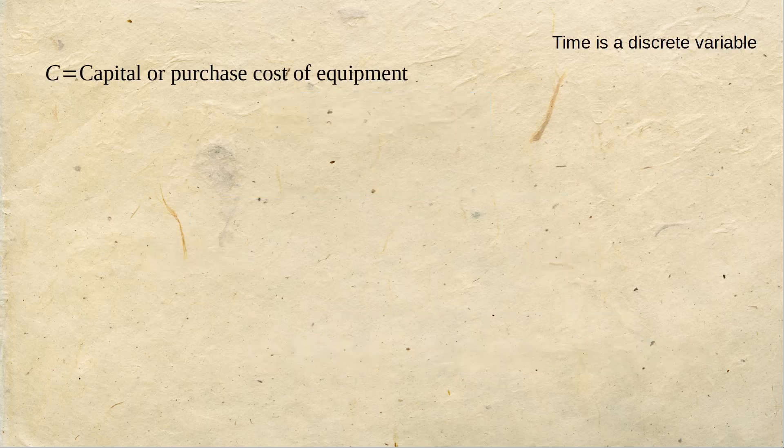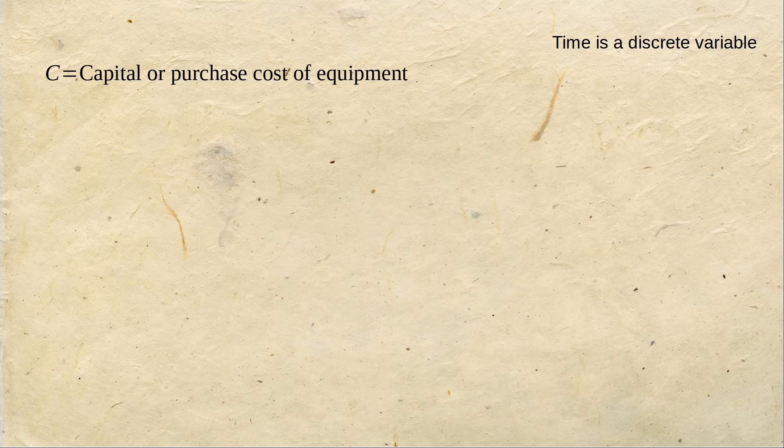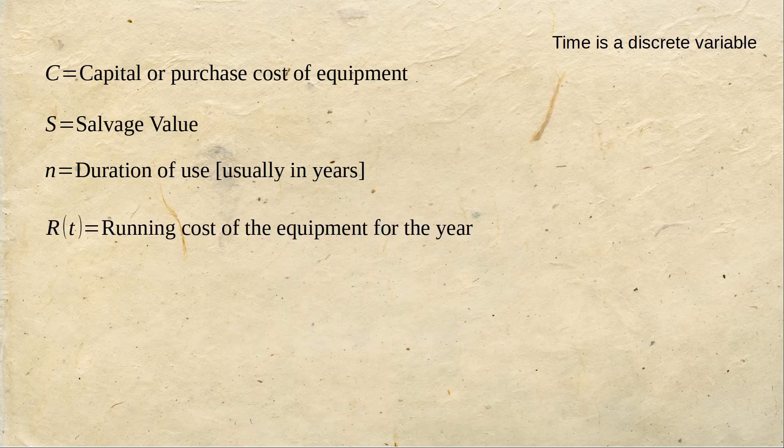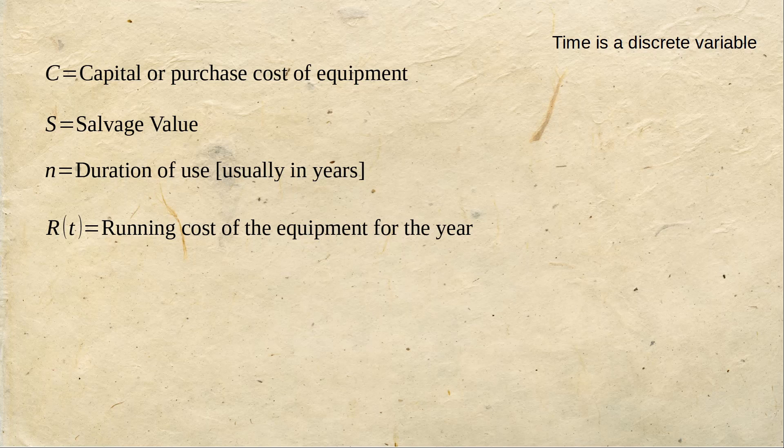Let's learn a few terms. Let C be the capital cost of the equipment. Let S be its salvage value. Let N be the duration of use. This is usually in years, it can be taken in months. Then you have the running cost in any year, R(T). T could be 1, 2, 3, 4, referring to year 1, year 2, year 3 or year 4. So it is the running cost of the equipment in a particular year.